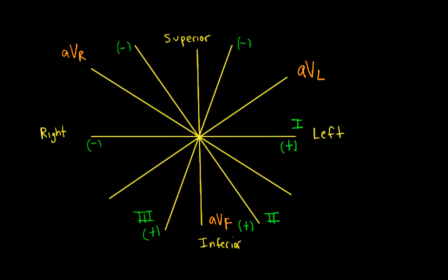For the polarities of the augmented leads: AVL takes the left arm electrode and subtracts from the central terminal, so the positive pole is on the left and the negative is down below. AVR takes the right arm electrode, so the positive pole is on the right and the negative is down. AVF takes the left leg electrode, so the positive pole is down by the left leg and the negative pole is up above.